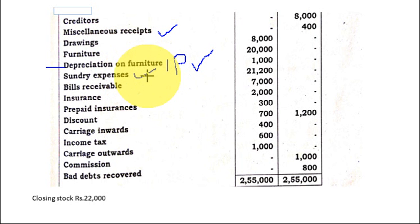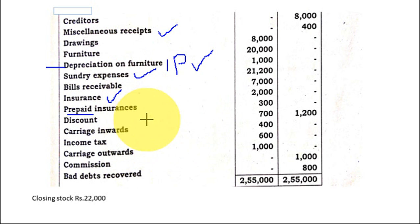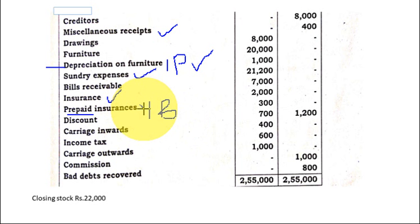Sundry expenses — yes, we write these because they are general expenses. Bills receivable is an asset, so it does not appear in Trading and Profit and Loss account — it goes to the balance sheet. Insurance is an expense so we write it. Prepaid insurance, if given in the adjustment, appears twice: in Profit and Loss as insurance less prepaid, and on the asset side as prepaid insurance. But if prepaid insurance is given only in the trial balance, we write it only once — directly in the balance sheet. So prepaid insurance will not appear in the Profit and Loss account.